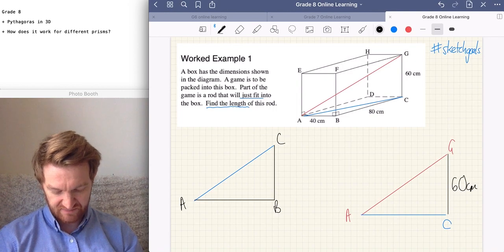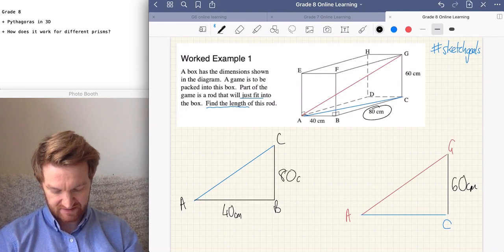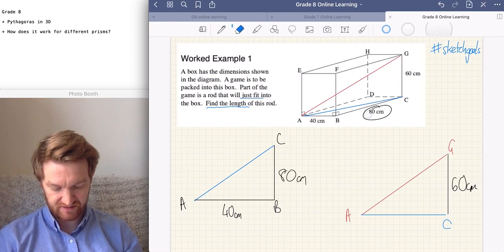We know that from A to B is 40 centimeters, so we label that onto the diagram. And from A to B to C is 80 centimeters. So again, label that onto the diagram.